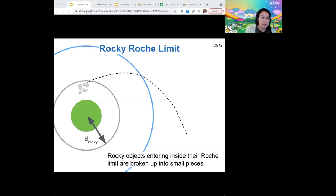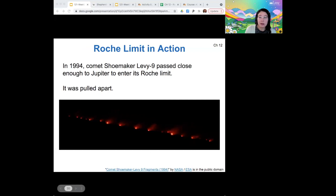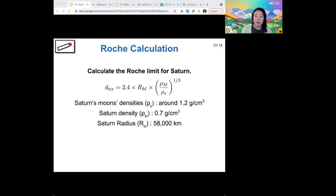And we've actually seen this in action before. So it's not, this isn't a theoretical idea. Jupiter, there was a comet called Shoemaker-Levy 9. And in 1994, it came close enough to Jupiter to enter the icy Roche limit. And it was pulled apart and then impacted Jupiter. So this was a spectacle that we got to watch play out.